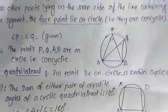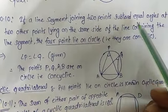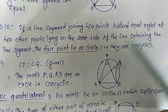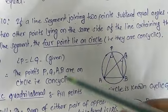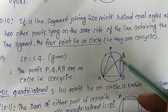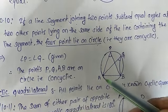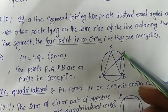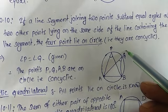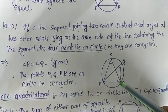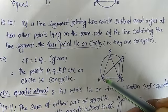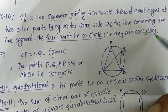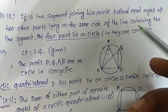Theorem 10.10 states that if a line segment joining two points subtends equal angles at two other points lying on the same side of the line, then the four points lie on a circle. If angle P equals angle Q, then points A, B, P, and Q all lie on the circle. Four points that lie on a circle are called concyclic points.